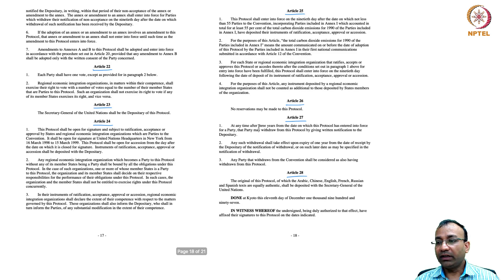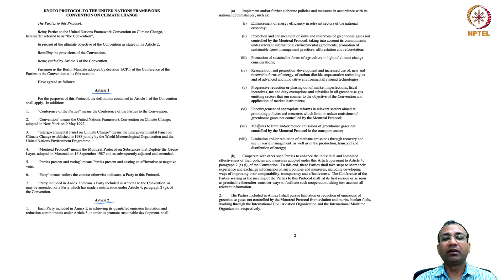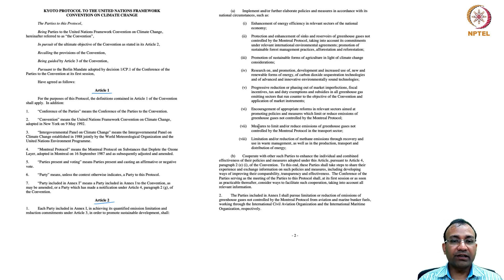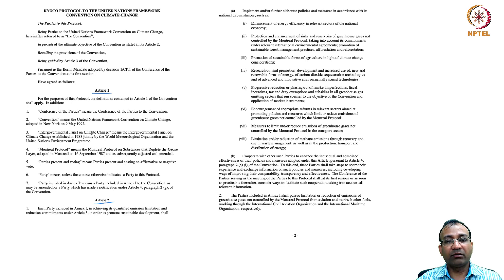In total there are 28 articles. Maybe briefly we can look at them here — it is a long document and you should all read it in your leisure time. As Article 1 states, for the purpose of this protocol the definitions contained in Article 1 of the Convention shall apply. In addition, 'Conference of the Parties' means the Conference of the Parties to the Convention, etc.